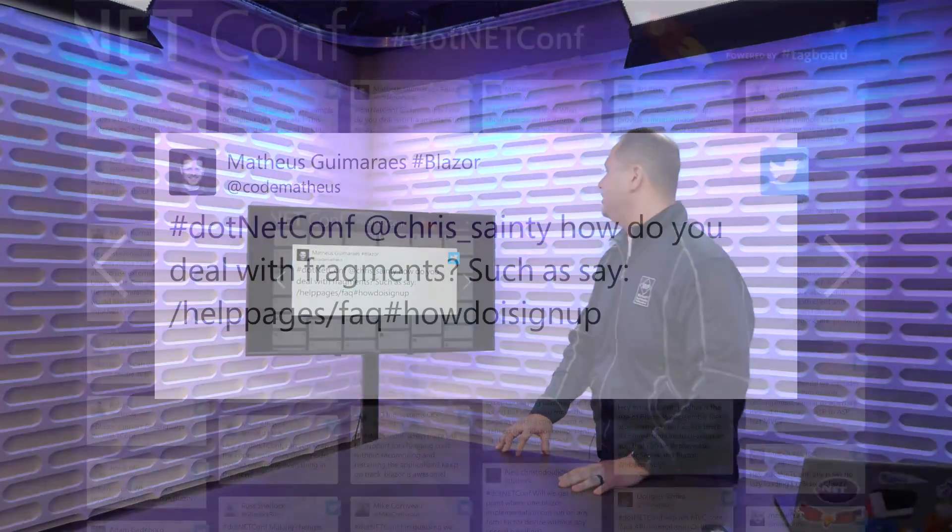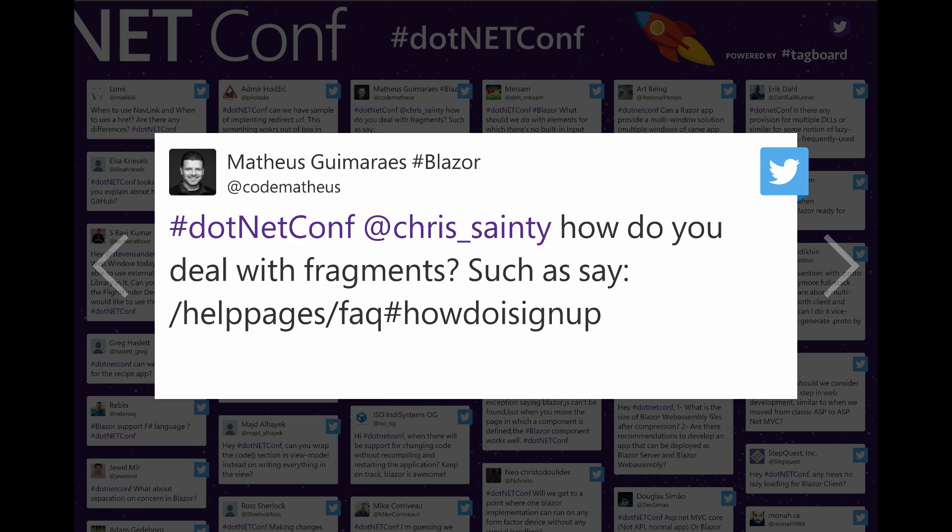Question about URL fragments (e.g., /help#faq): navigating to a specific section of a page. Honestly, it's not easy to do out of the box in Blazor — you'd need JavaScript interop. You'd create some JavaScript and use something like element.scrollTo(). There's nothing Blazor provides natively for this.